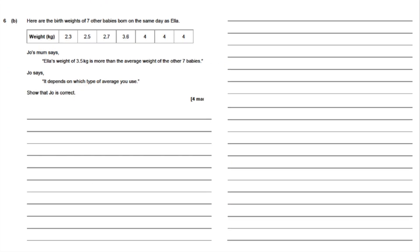Question 6b: here are the birth weights of seven other babies born on the same day as Ella. Joe's mum says Ella's weight of 3.5 kg is more than half the average weight of the other seven babies. Joe says it depends on which type of average you use. Show that Joe is correct.